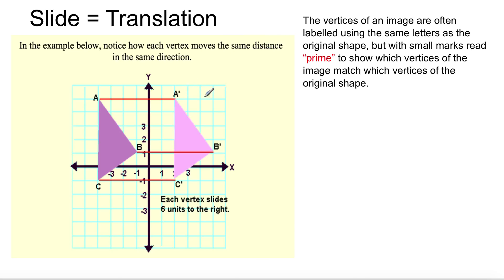Here's your small mark. So this is prime. So here's a, here's a prime. These are all the same distance from one another. But this moves 6 units to the right. So it's the same image, a, b, c. This is a, b, c prime.